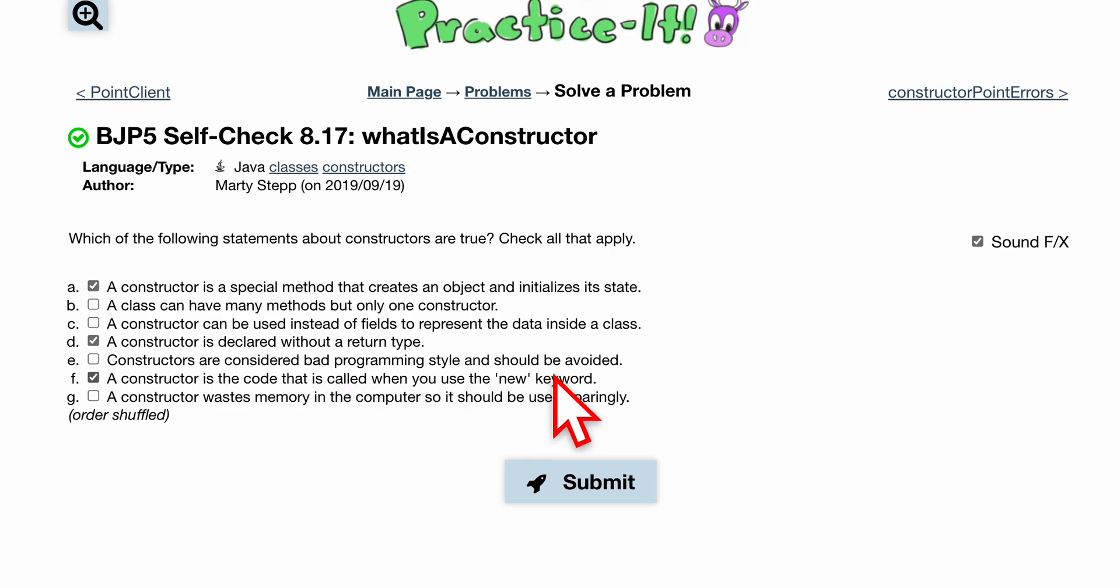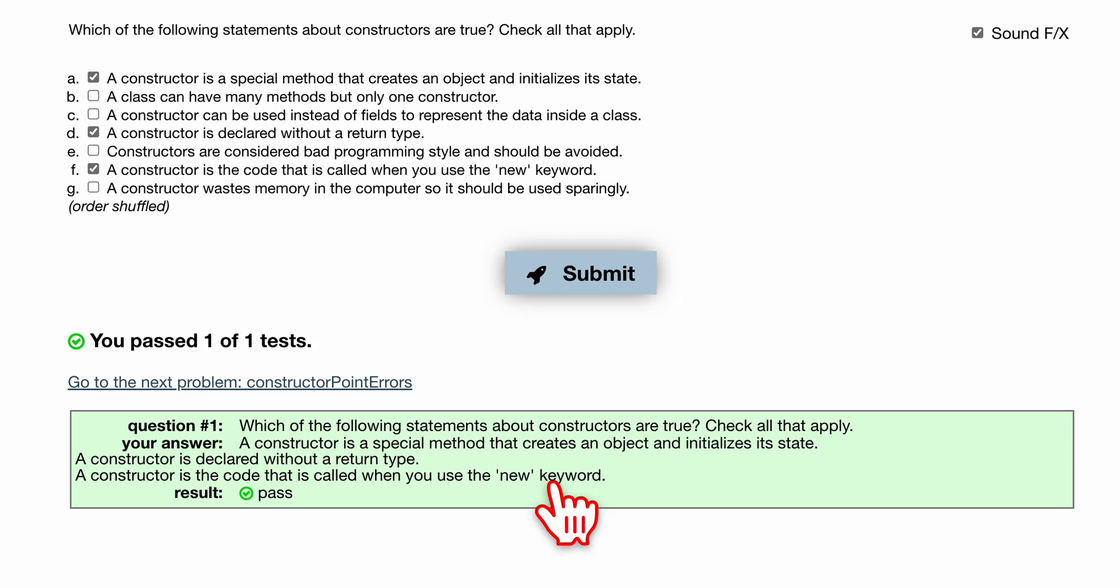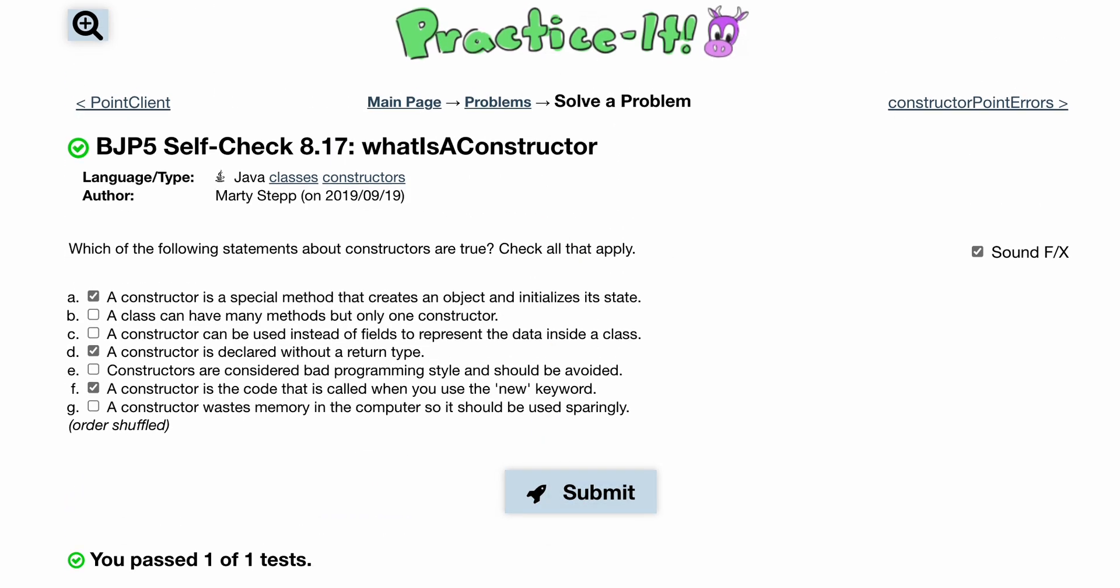Option F: a constructor is the code that is called when you use the 'new' keyword. This is true; remember, it's the default method that's called with the class. This last one is just a bit silly. So those are the three that we are looking for, and passing one another test.